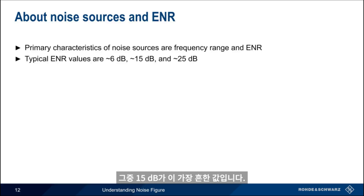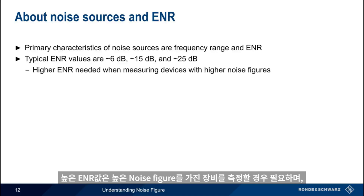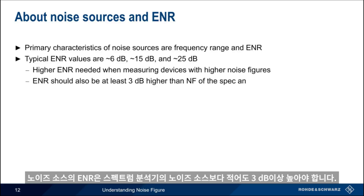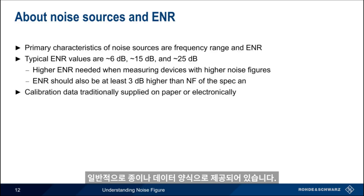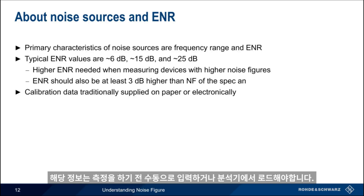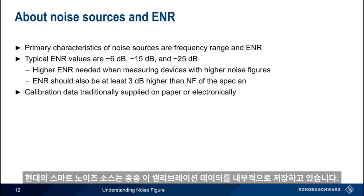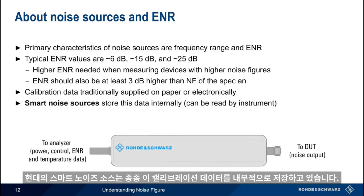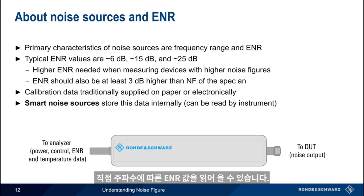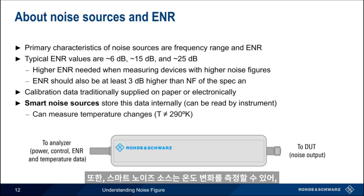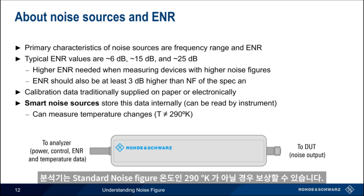Higher ENR values are needed when measuring devices that have higher noise figures, and the source's ENR should also be at least 3 dB higher than the noise figure of the spectrum analyzer. The ENR versus frequency values of a noise source are referred to as calibration data, which traditionally was provided in either paper or electronic format and would have to be manually entered or loaded into the analyzer. Modern smart noise sources often store this calibration data internally — within the source itself — and the analyzer can then read the ENR versus frequency values directly from the source. Smart noise sources can also measure temperature changes, allowing the analyzer to compensate for measurements not made at the standard noise figure temperature of 290 degrees Kelvin.